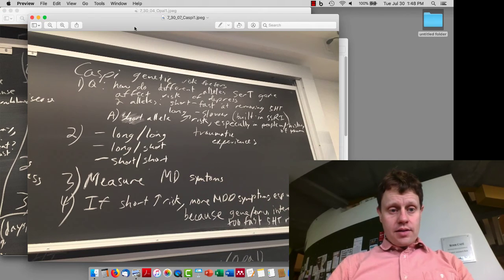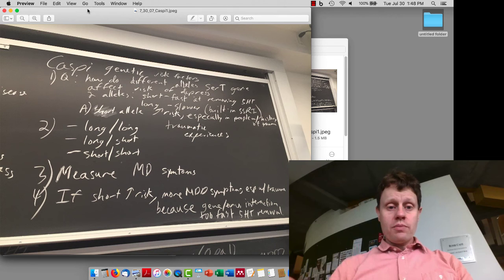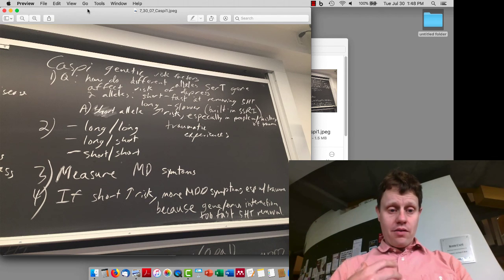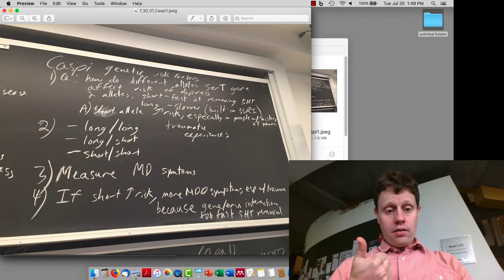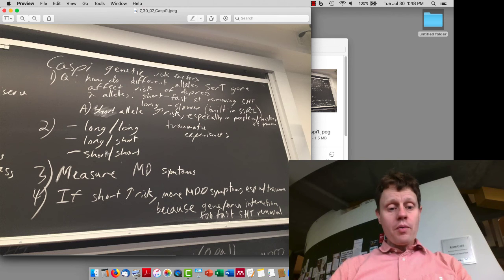We also discussed the CASPY study, looking at the interaction between genetics and environment. They looked at three different genotypes: homozygous long, meaning the slower serotonin reuptake molecules, homozygous short, and then heterozygous.